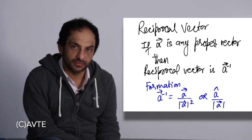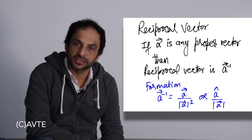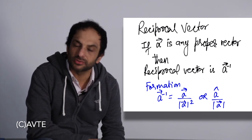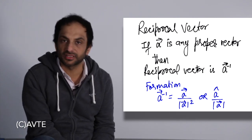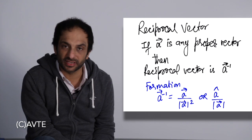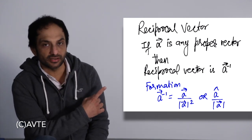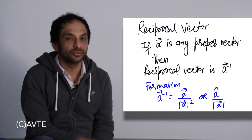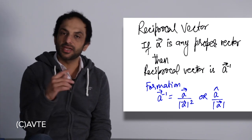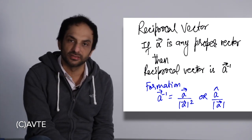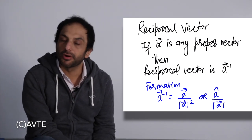A reciprocal vector is a vector whose magnitude is the reciprocal of the given vector, and it must be in the same direction as that vector. The symbol of a reciprocal vector is a-inverse. You cannot write a vector in the denominator, so a-inverse is the reciprocal vector, and its formula is vector a divided by mod a squared.